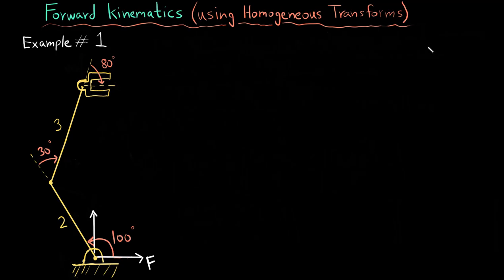Hi, I am Zain Khan and in this video we are going to do an example of forward kinematics using homogeneous transforms. I have a very simple robot drawn here. The robot has two links of two units and three units respectively, and at the end there is a gripper, which is also called the end effector.